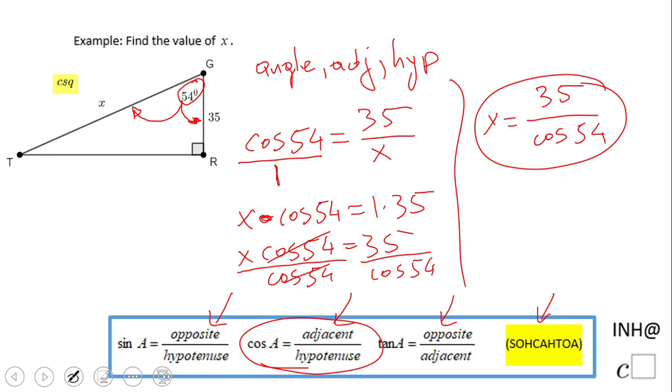We're going to have 35 divided by cosine of 54, and that will be 59.54. I'm going to leave some decimals here. Again, read the problem to see how you need to approximate your value.